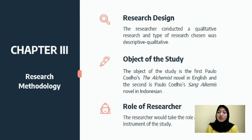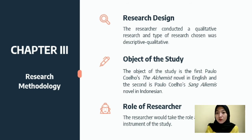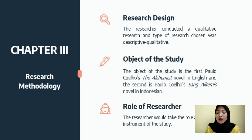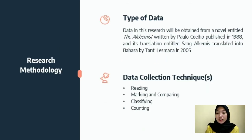Moving to Chapter 3, research methodology. The research design used is qualitative research, specifically descriptive qualitative. The object of the study is Paulo Coelho's novel The Alchemist in both English and its Indonesian translation, Sang Alkemis. The researcher takes the role as the key instrument. Data will be obtained from the novel The Alchemist, written by Paulo Coelho and published in 1988, and its Indonesian translation, Sang Alkemis, translated by Tanti Lesmana in 2005.